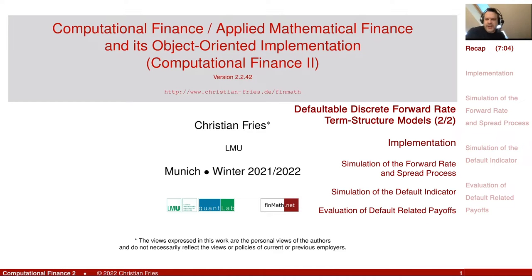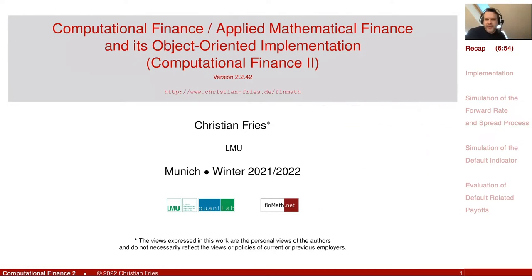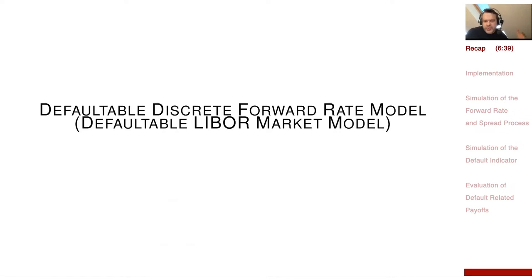In our last session, I introduced a bigger model, a hybrid model, building on top of our stochastic forward rate model. We are now modeling stochastic credit spreads, or taking a different view, a stochastic defaultable forward rate that follows an independent stochastic process that may have its own Brownian drivers.